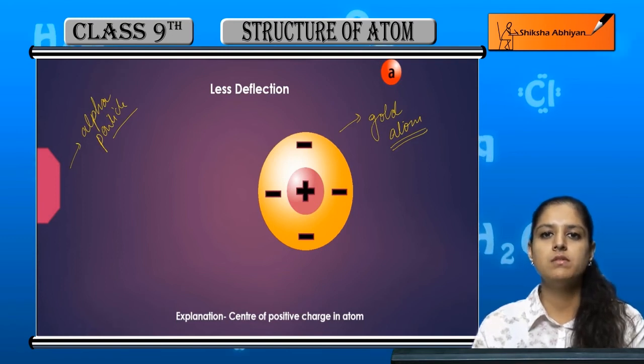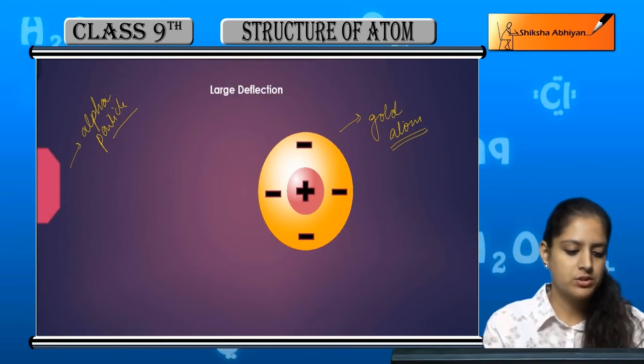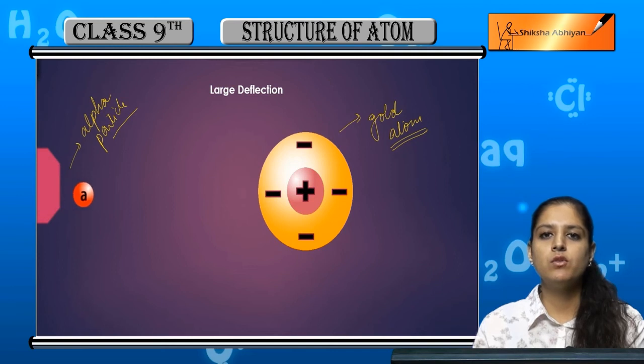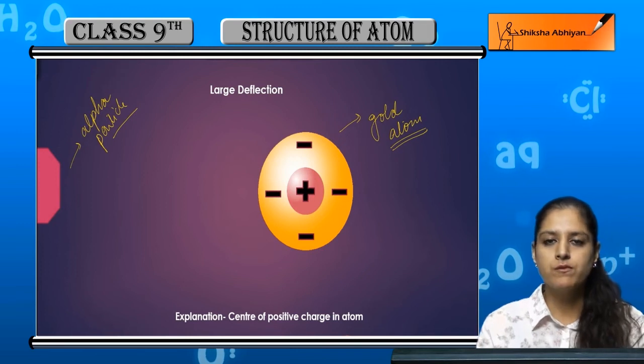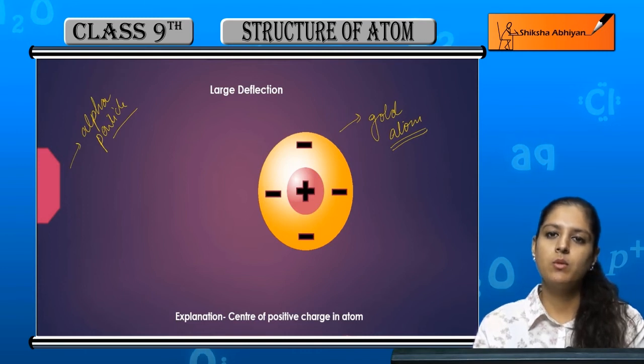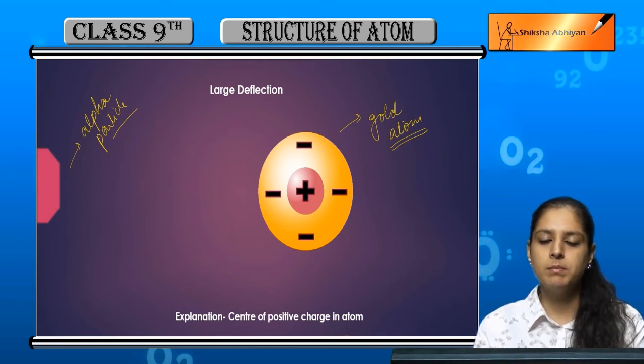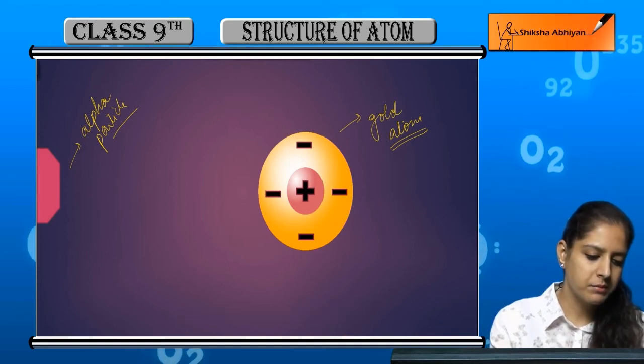The third type of deflection was large deflection, where the alpha particle deflected at a higher angle. The reason for this large deflection is the same as small deflection - the center of positive charge. In the last case, the alpha particle was further from the center so it deflected less, but when the alpha particle came closer to the center, it repelled more and deflected at a larger angle.